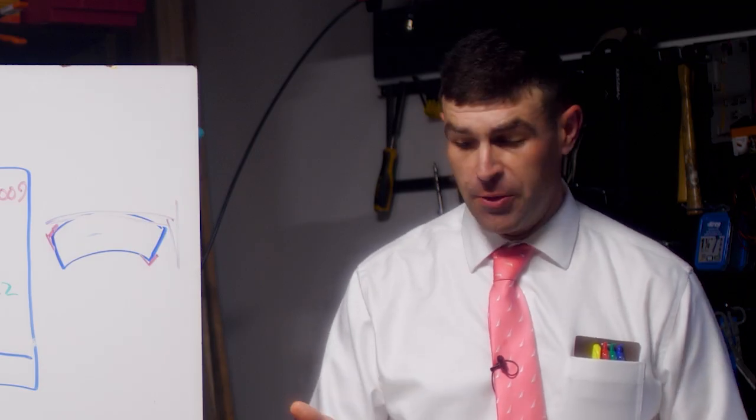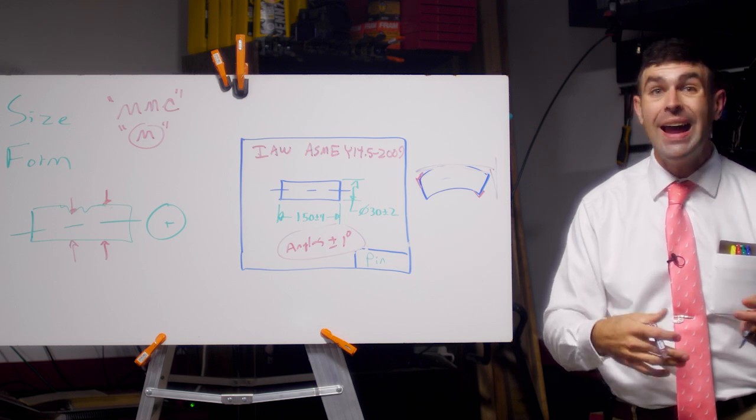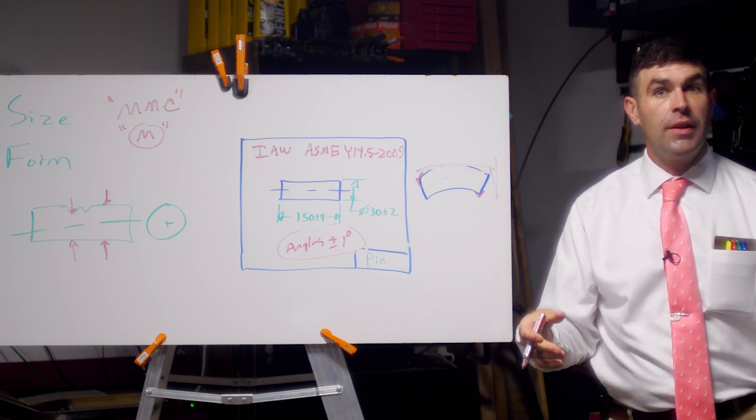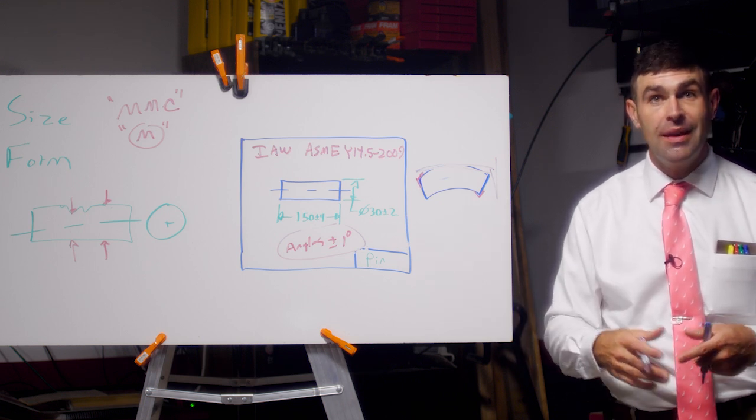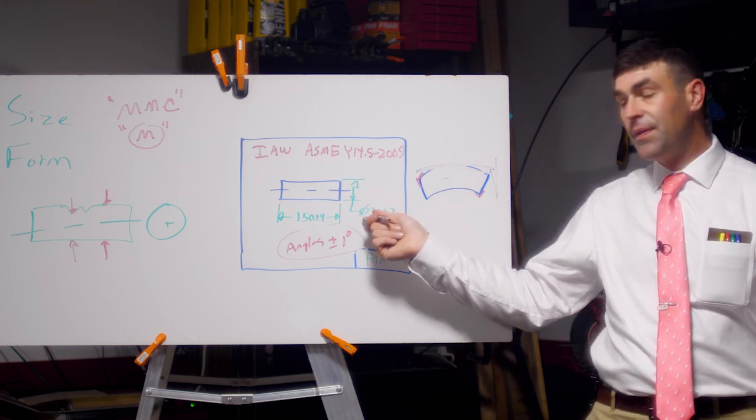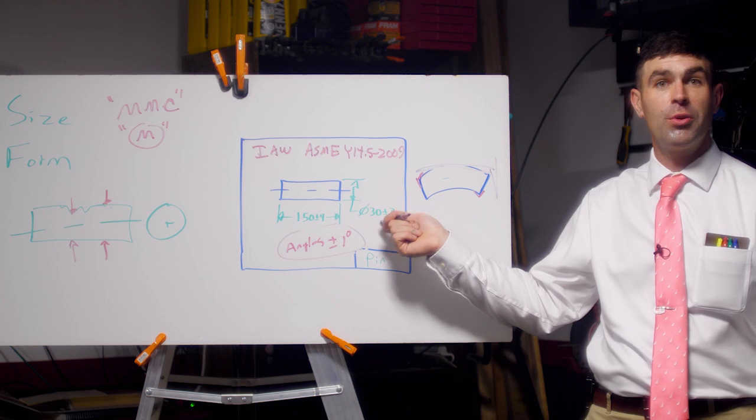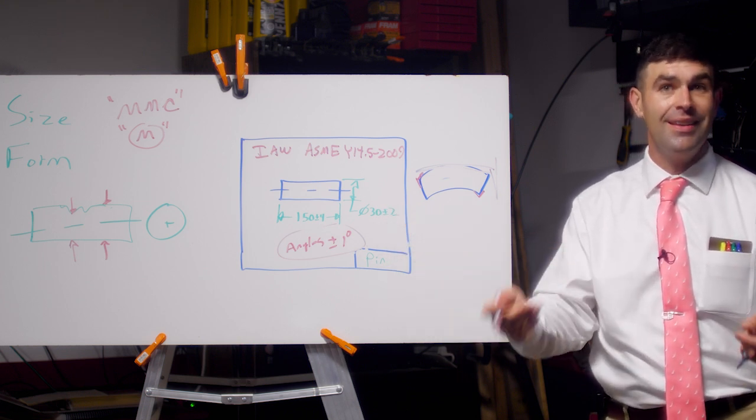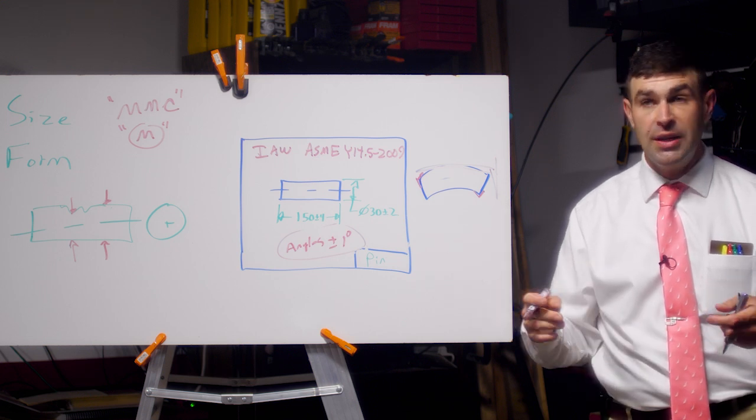Rule number one doesn't change that much, but your company should know what year they're using. You don't want to just leave it blank. So what does it do? Essentially, it's going to combine the size and the form. They're going to be kind of locked together. So the definition of rule number one, well, the paraphrased definition of rule number one is that any dimensioned regular feature of size must have perfect form at the maximum material condition.